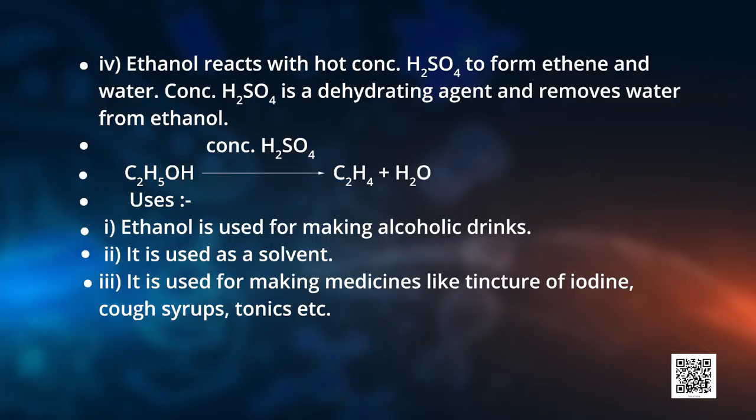Ethanol reacts with hot concentrated sulfuric acid to form ethene. Concentrated sulfuric acid is a dehydrating agent, which means it removes water from ethanol. If you take ethanol and add a few drops of concentrated sulfuric acid, it will remove water and form C₂H₄. The molecular formula C₂H₄ is ethene — an alkene with two carbons and four hydrogens.